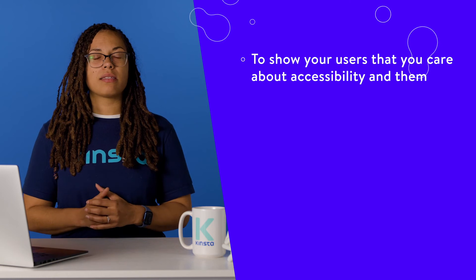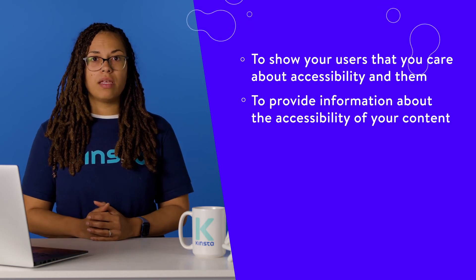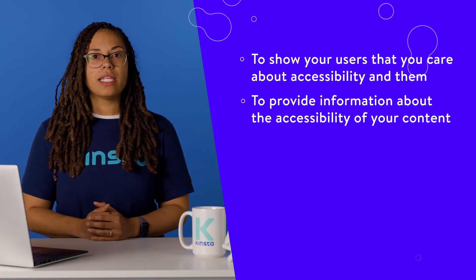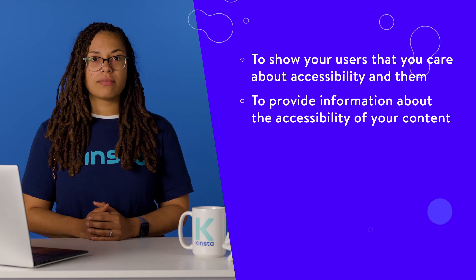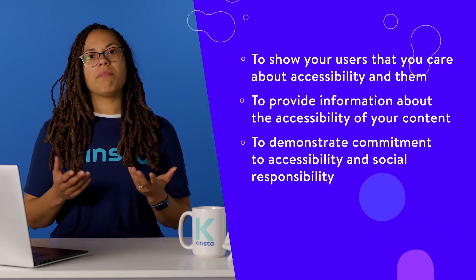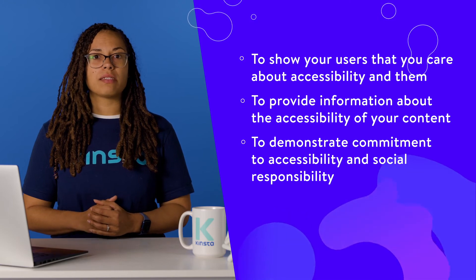An accessibility statement is a page on your website where you communicate your internal policies, accessibility goals, and past successes regarding working with people who have disabilities. You should generate and publish an accessibility statement on your WordPress website to show your users that you care about accessibility, to provide information about the accessibility of your content, and to demonstrate commitment to accessibility and social responsibility.